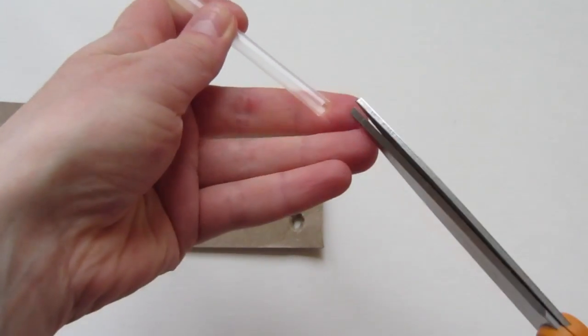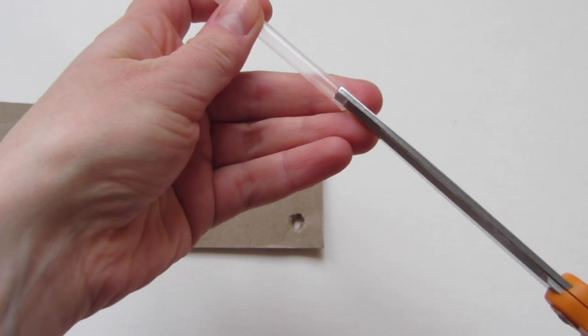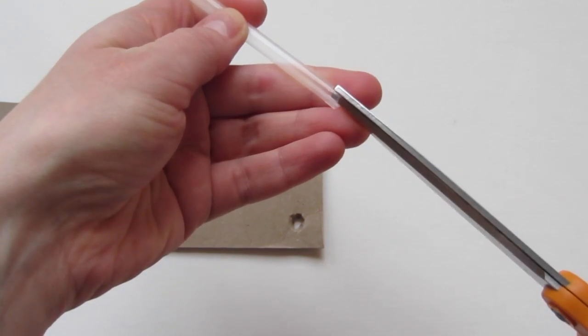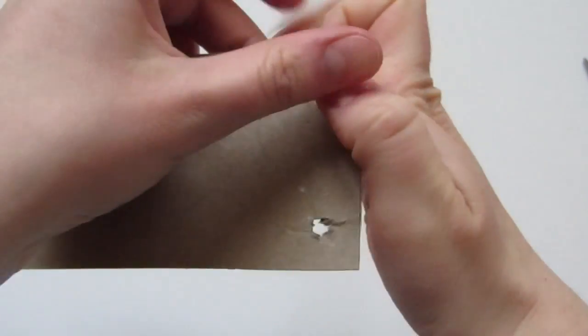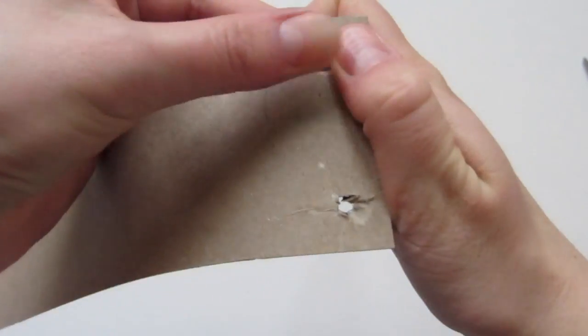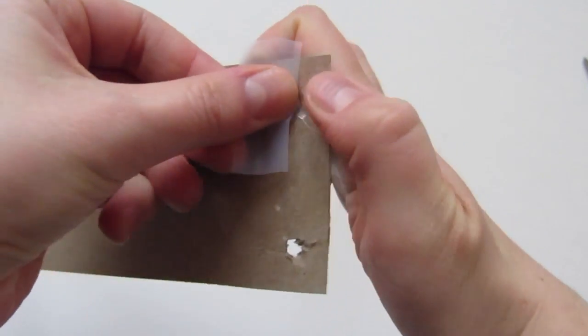Cut small slits in one end of a straw. Run the straw through a hole. Fold open the flaps, and then tape to secure.